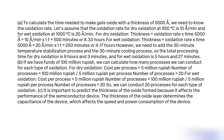To calculate the time needed to make gate oxide with a thickness of 5,000 Å, we need to know the oxidation rate. Let's assume that the oxidation rate for dry oxidation at 950°C is 10 Å/min, and for wet oxidation at 1,000°C is 20 Å/min.